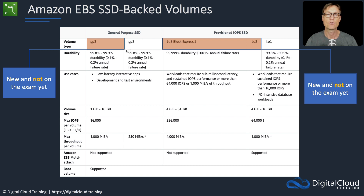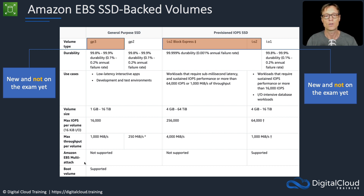The GP2 is the general purpose SSD. It's the default volume when you launch an on-demand instance without changing anything. It's good for low-latency apps, with volume sizes from 1 GB to 16 TiB. The max IOPS per volume is 16,000 — take note of that, as exam questions will give you a use case with required IOPS and ask you to choose the correct volume type.